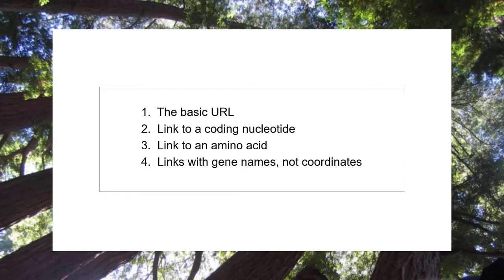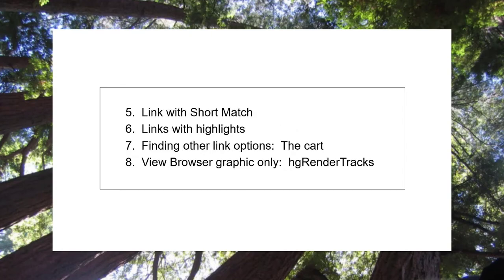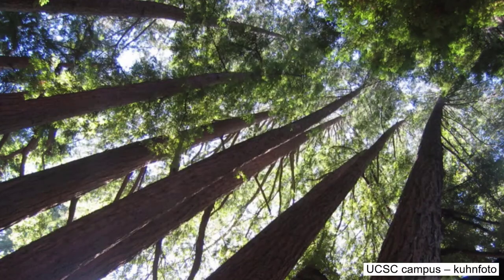In this, the second of the series, we will look at how to navigate to specific locations within genes without knowing their genomic coordinates, how to set highlights, how to find obscure configuration parameters, and how to use some other useful features for making customized links to the browser.